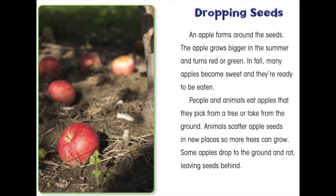An apple forms around the seeds. The apple grows bigger in the summer and turns red or green. In fall many apples become sweet and they're ready to be eaten. People and animals eat apples that they pick from a tree or take from the ground. Animals scatter apple seeds in new places so more trees can grow.